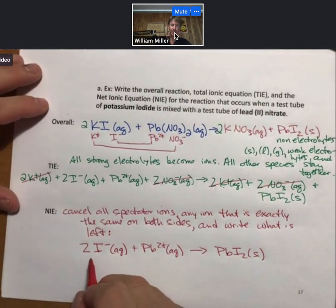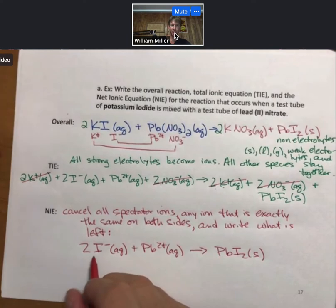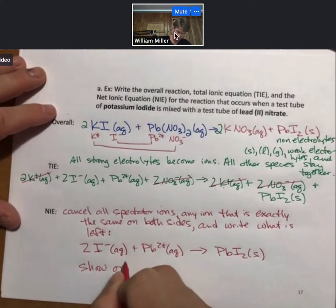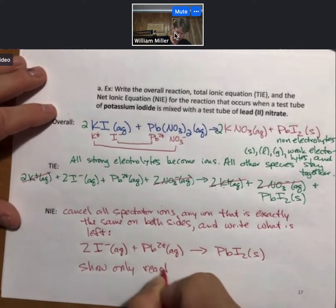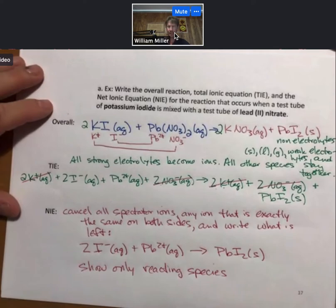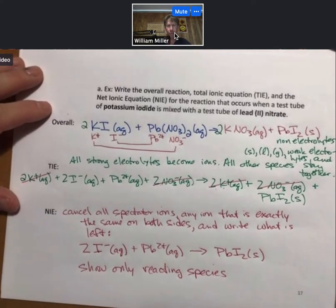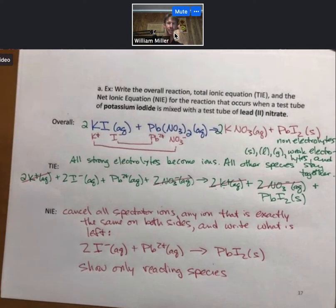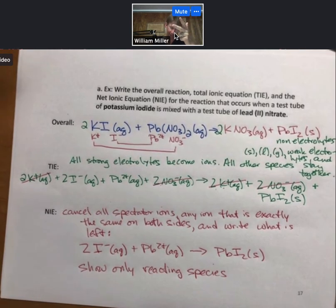Now, the net ionic equation, the point of it is we show only the reacting species. And we can ask the net ionic equation, what reaction happened, if any? And what kind of bonds were made? Because the definition of a true chemical reaction is that either bonds were made, bonds were broken, or both bonds were made and broken.